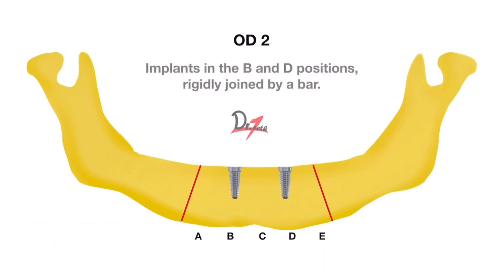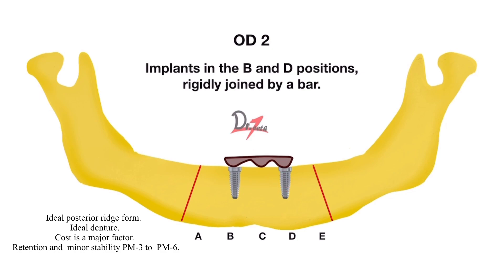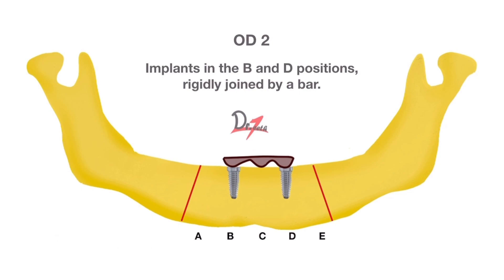In OD2, the implant position is the same — B and D — but we have rigidly joined them by a bar. So OD1 had independent implants, but in OD2 they are connected with a rigid bar.